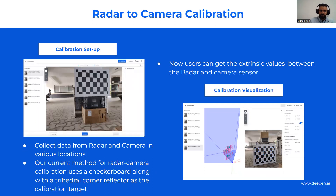For radar-to-camera, we do require a target — a trihedral corner reflector positioned near a checkerboard. We collect multiple pairs with the checkerboard and trihedral target to calculate the extrinsic calibration and provide error metrics between radar and camera. We also support radar-to-vehicle. We have a number of other permutations in progress, and we'd love to hear from you about what sensor pairs and use cases you need. Please contact us at info@dpin.ai.